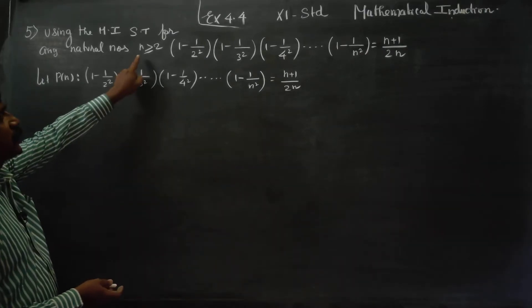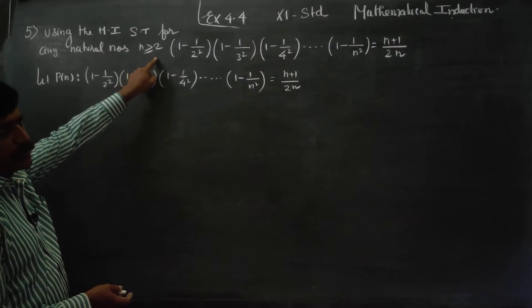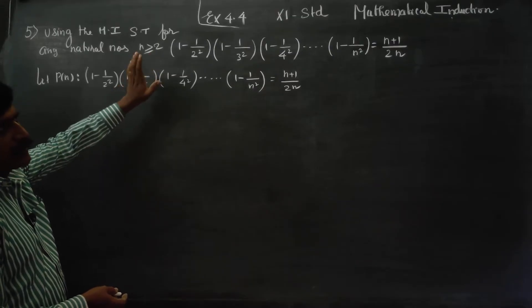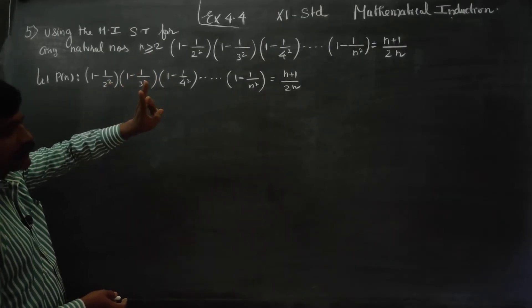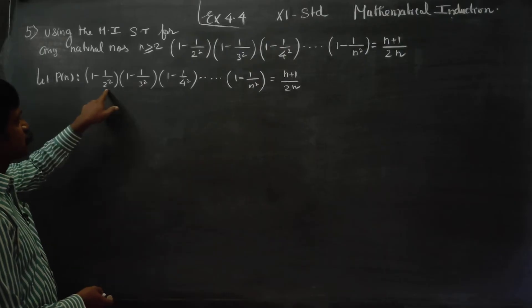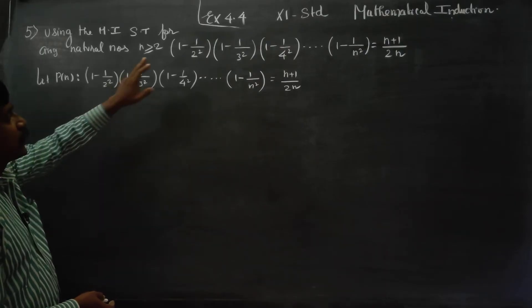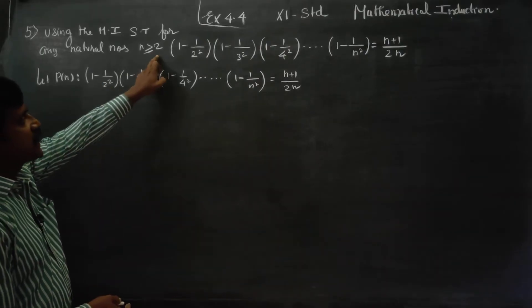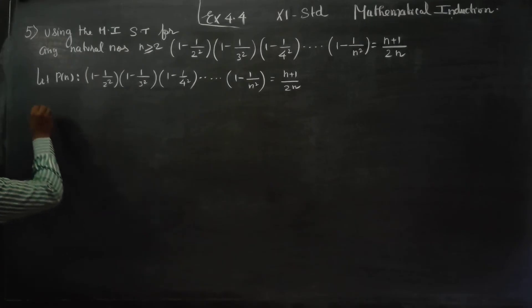But in this sum, n is greater than or equal to 2, so n value starts from 2. Since n value starts from 2, P of 2 is the base case.